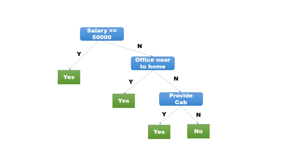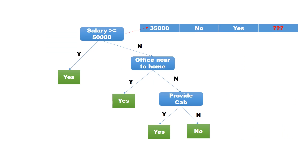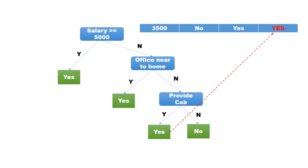Here is the complete decision tree. Let us use it to classify a new record. Start with the root node: salary greater than 50,000 — the condition is no. Go to the branch labeled no. The next decision node is office near to home — condition is false, so traverse the no branch. Next is provide cab facility — it is yes. We have reached a leaf node. Hence, the predicted label is yes.